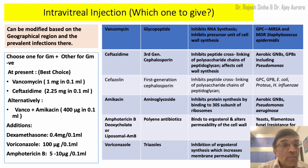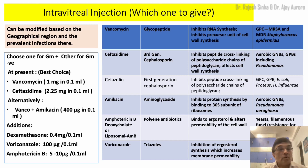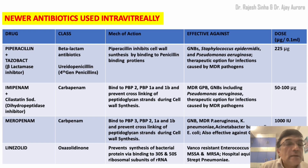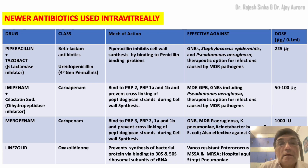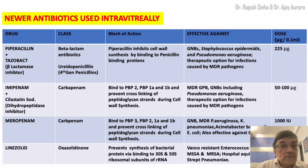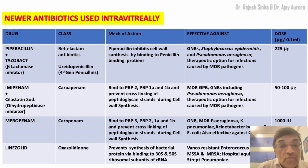Alternatively, you could use vancomycin with dexamethasone for bacterial endophthalmitis, or voriconazole or amphotericin B for fungal endophthalmitis. In cases of ceftazidime resistance, alternatives include piperacillin-tazobactam, remembering the final concentration of 225 mcg. Imipenem, a carbapenem, is another option with dosages of 50–200 mcg. It is important to know the dosages and have them posted in your OT, and always remember the target concentration of any intravitreal injection.